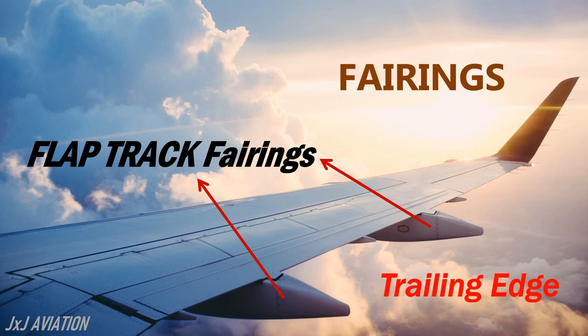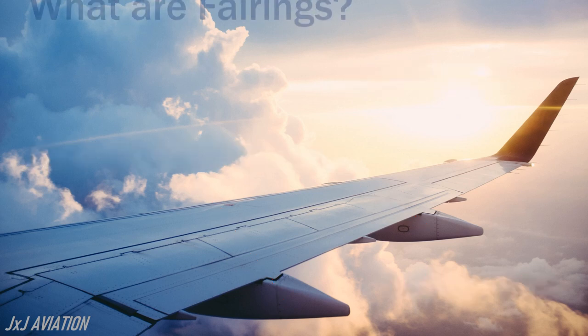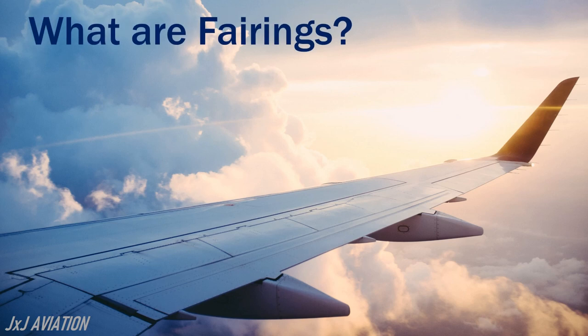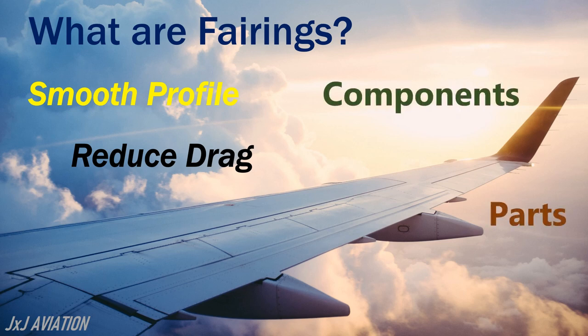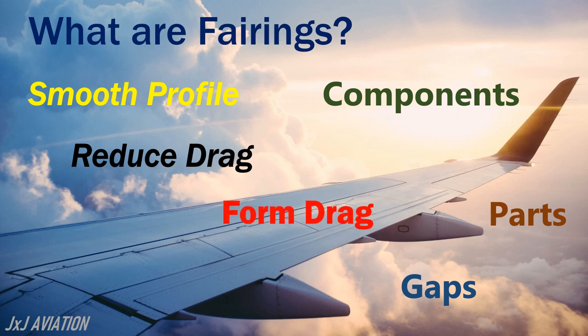Let's see what is meant by fairings. Fairings are structures installed on an aircraft to create a smooth profile and to reduce the drag acting on the aircraft. These fairings cover other components, parts, or gaps in the aircraft. This reduces the form drag and the interference drag on the aircraft.